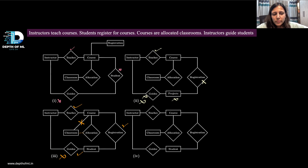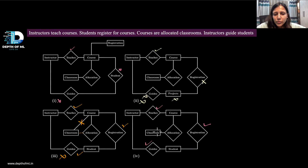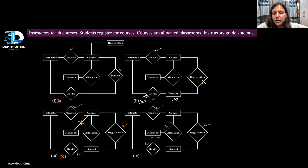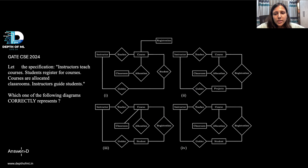The fourth option has: instructor teaches course — fine. Student registers for course — fine. Instructor guides student — awesome. And course and classroom are related with the relationship allocation — also correct. So the answer is the fourth option, which is option D.